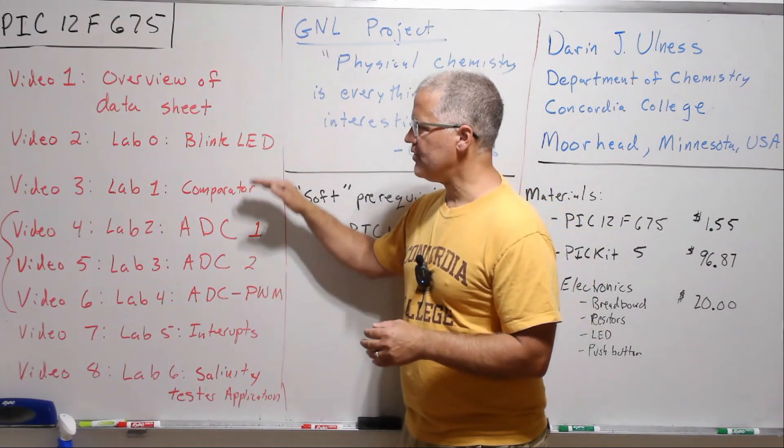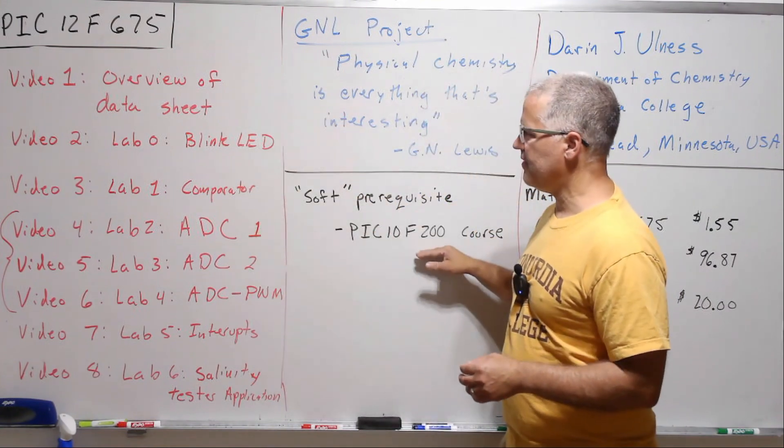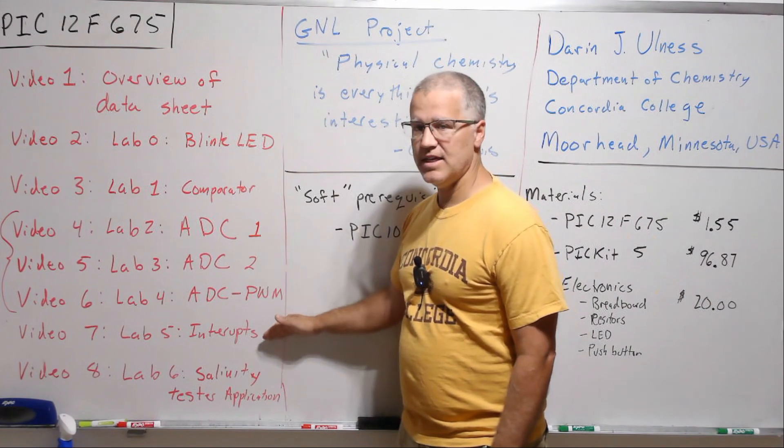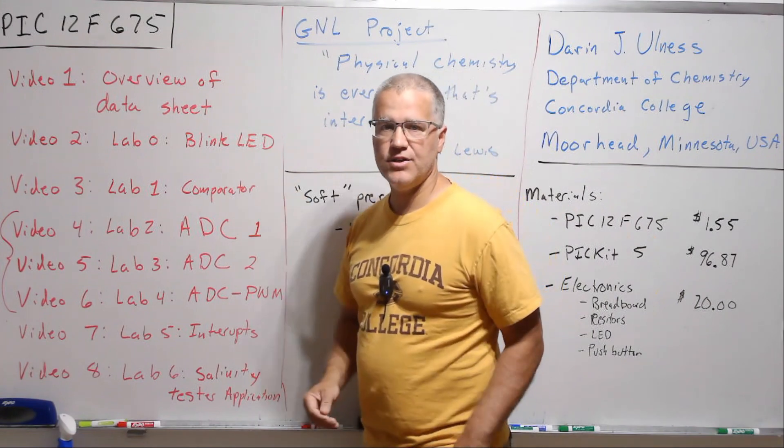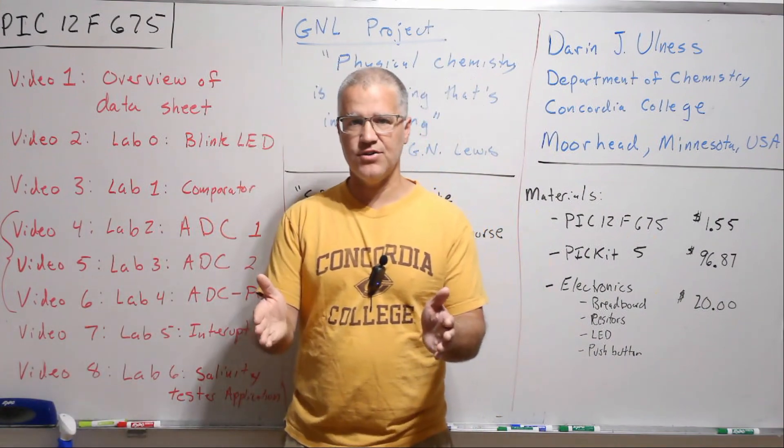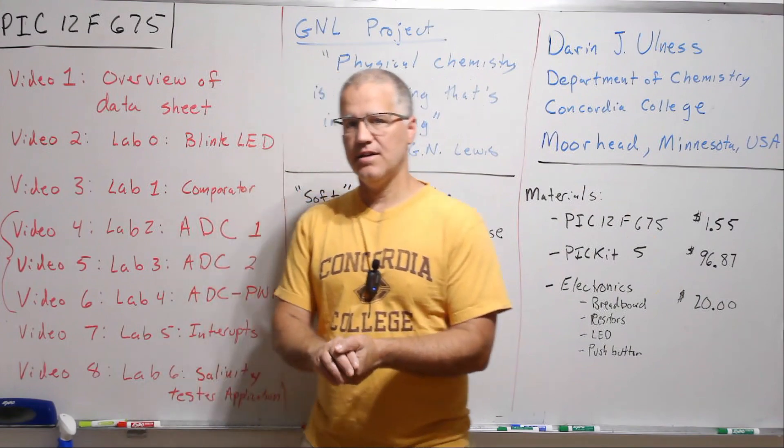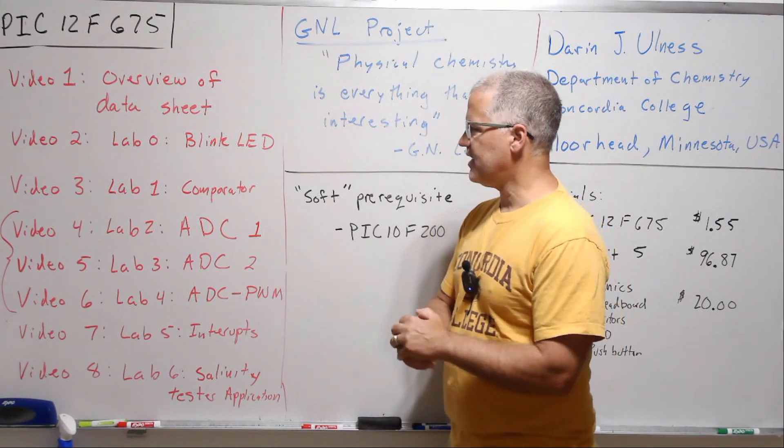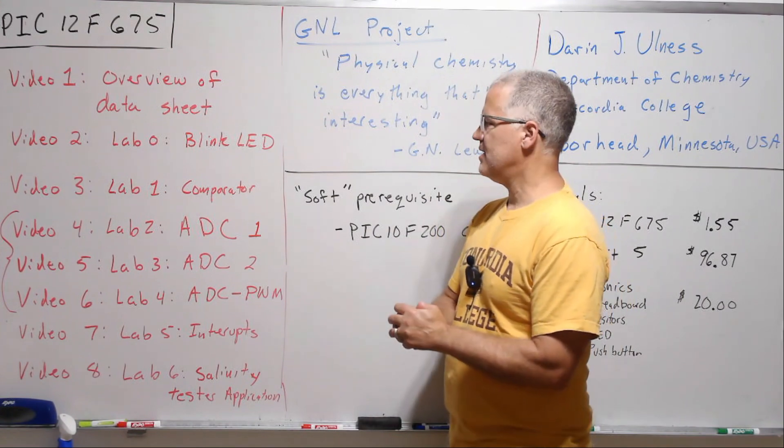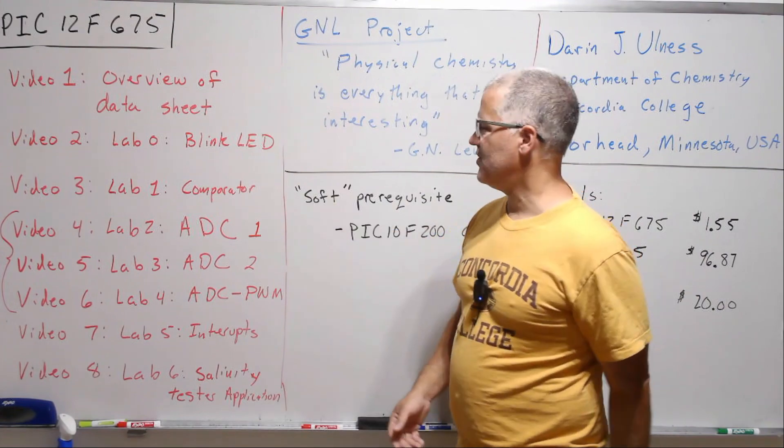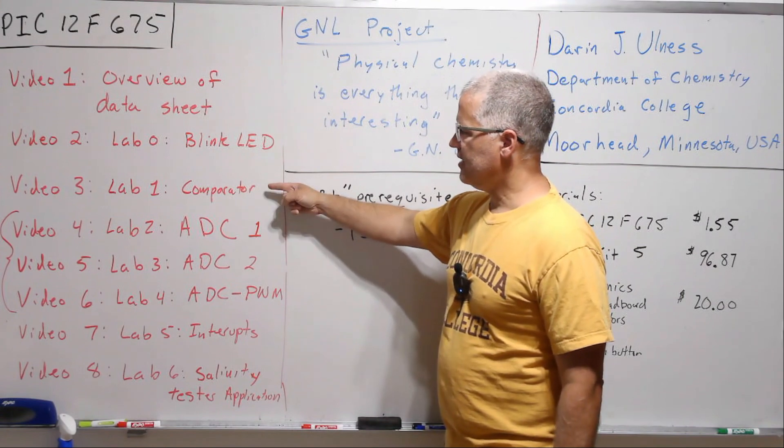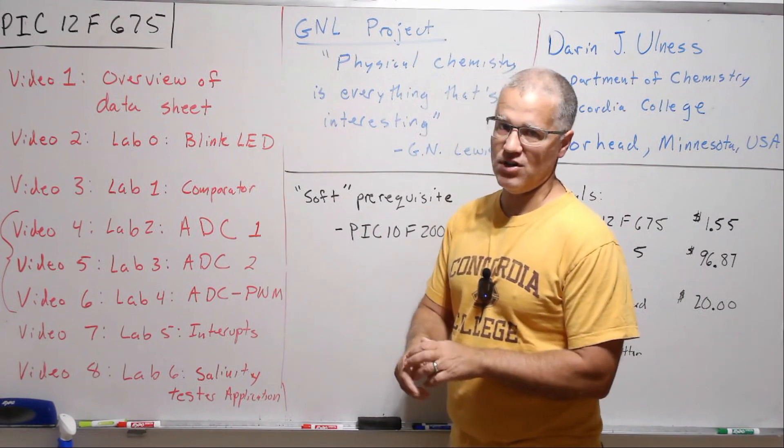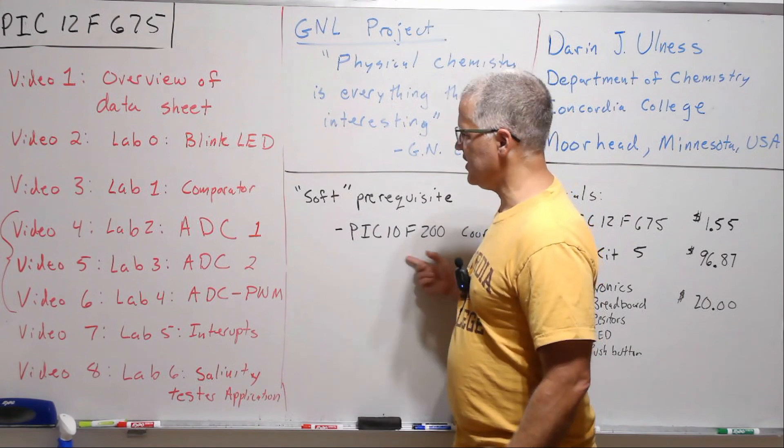Now we get into the real differences between this and the PIC 10F200, and that is the comparators, the digital to analog conversion, and the interrupts. Lab one will be on using the comparator. A comparator simply compares two voltages and then gives an output based on that. Yes, of course, you could use a less sophisticated chip such as just an op amp circuit or even just a transistor circuit to make a comparator, but it's so handy to be able to do that with the microcontrollers that they're built into almost all of the other PIC controllers beyond these very simple ones.